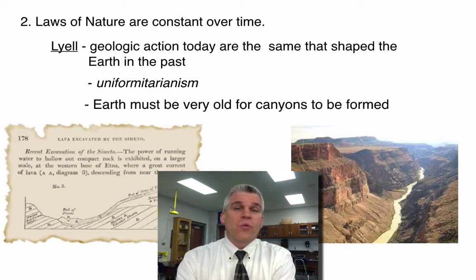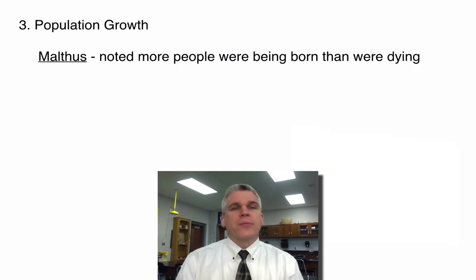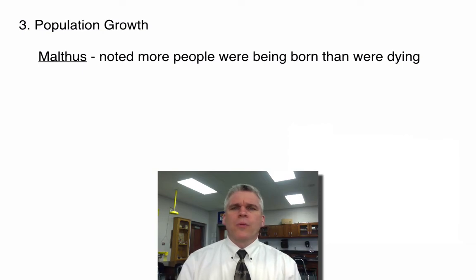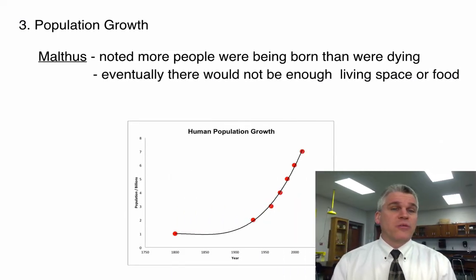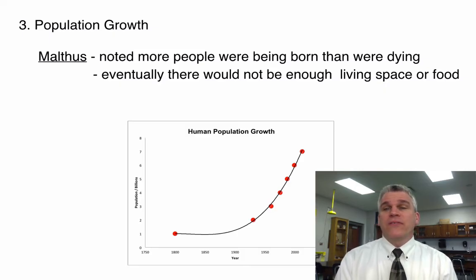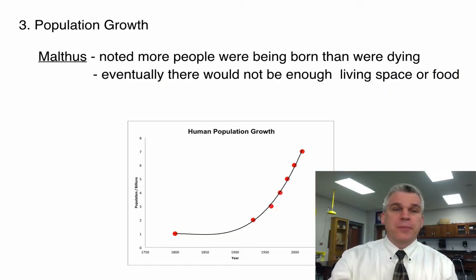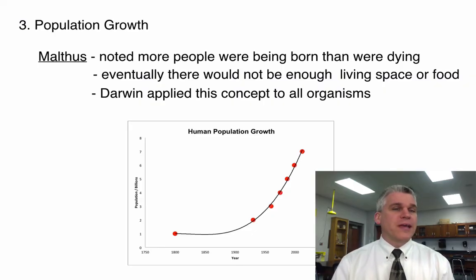We can expect the way things happen today is probably the way that they have always happened. Another book that he read was by Thomas Malthus. Now, Thomas Malthus was looking more at the population of humans than anything else. He was noticing, especially in London, that there's a lot of people being born and fewer people were dying, and that eventually there's not going to be enough living space or food for all these people. But Darwin took that idea and applied it to all the different types of organisms.